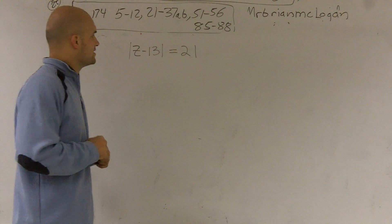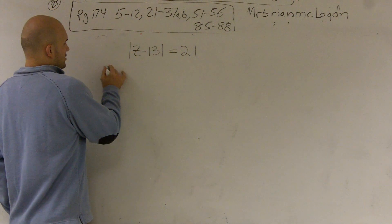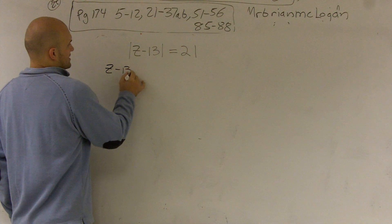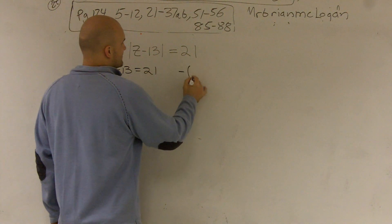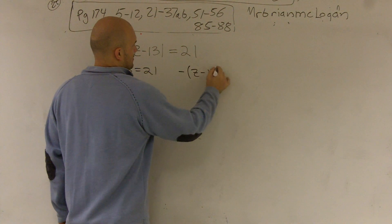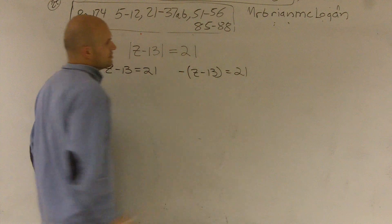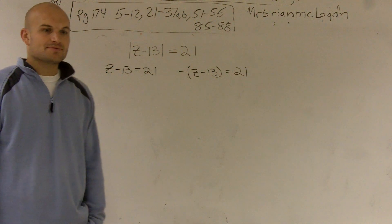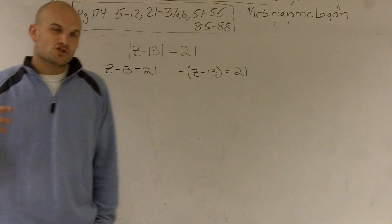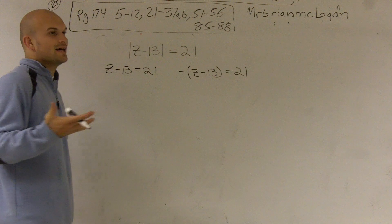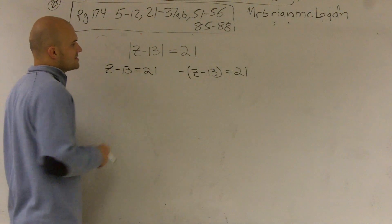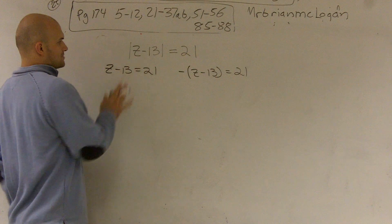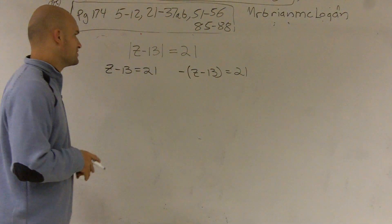So here when we're talking about absolute value, we can say that if I go my regular distance, let's say it's just z minus 13 equals 21, or if I go in the negative distance, either way I'm still going to have an answer of 21. So what are my two values that would make my absolute value still be 21?